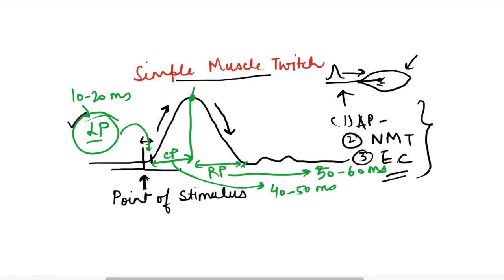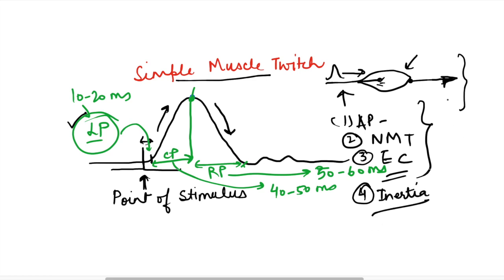If the device on which we are recording is a mechanical device — where a lever is attached to the muscle — then this mechanical device has some inertia as well. So in a mechanical device, the inertia of the lever also becomes a reason for the latent period. If we are recording electronically, then this inertia will not be present.